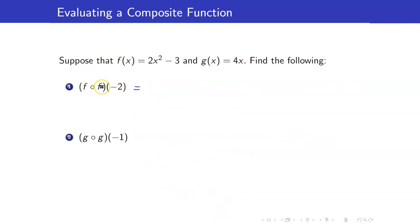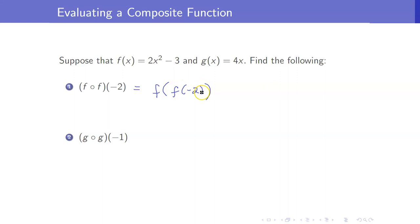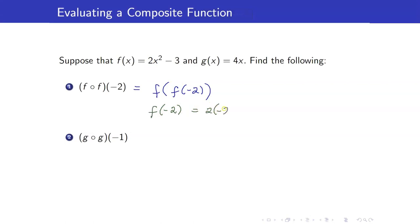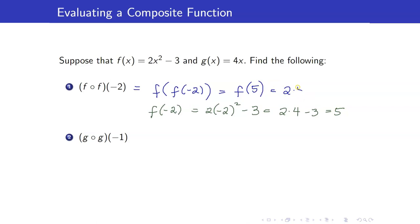Here are some more examples. Take note that we can get the composition of f with itself. This is f of f of negative 2. f of negative 2 is 2 times negative 2 squared minus 3, so this is 2 times 4 minus 3, which is equal to 5. We now know the value of f of negative 2. I will replace f of negative 2 by 5. f of 5 is 2 times 5 squared minus 3, and this is 50 minus 3, that's 47.